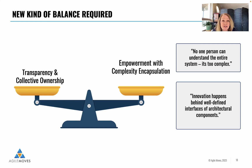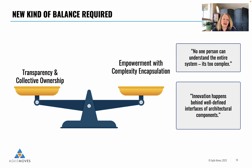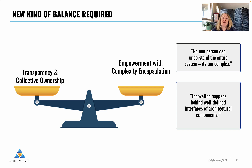In short, we need a new kind of balance. If we have a system that we can build, make available to customers, test, provision, and support with, let's say 100 to 125 people, it is possible to have full transparency and collective ownership. However, as you see from a quote here on the right, no one person can understand the entire system — it's just not possible, the system is too complex. So now we have to find that balance by allowing empowerment and encapsulation of complexity behind well-defined interfaces.